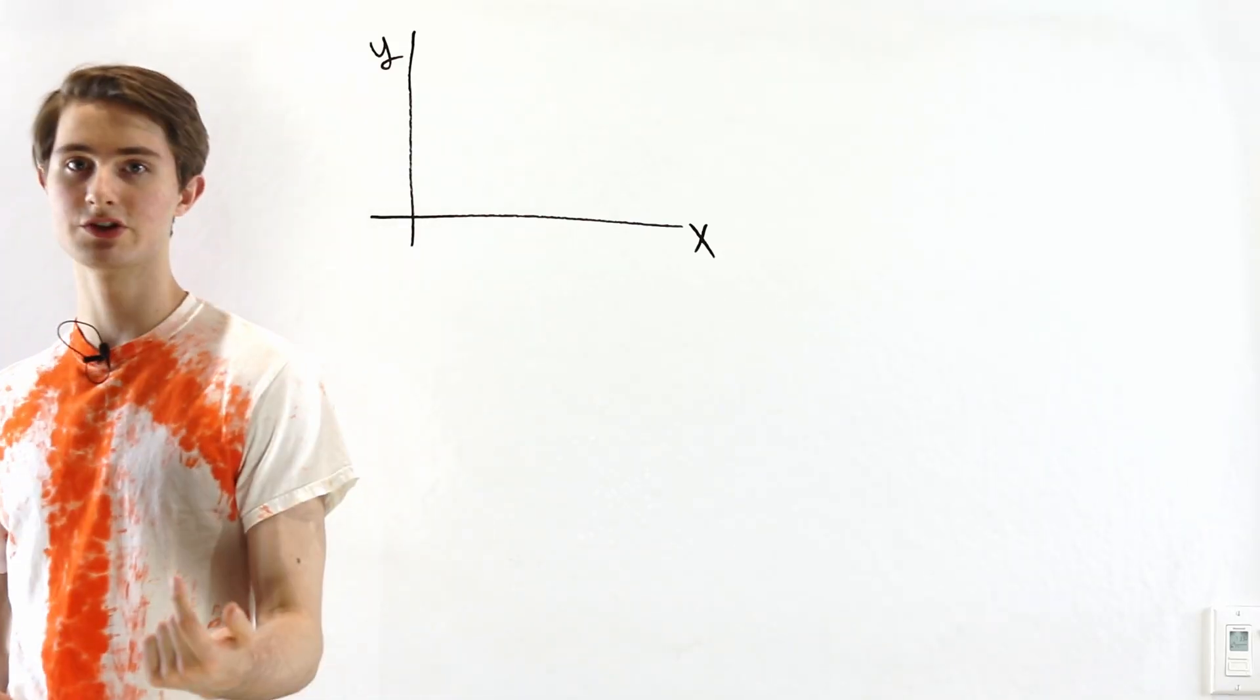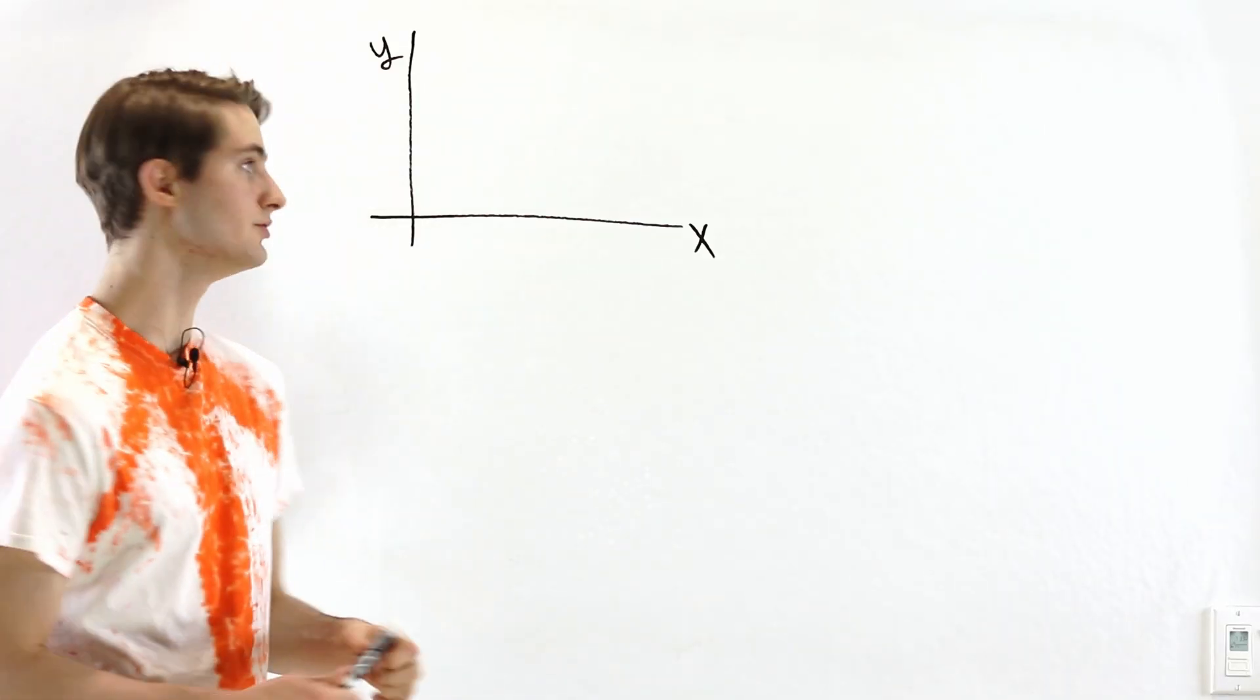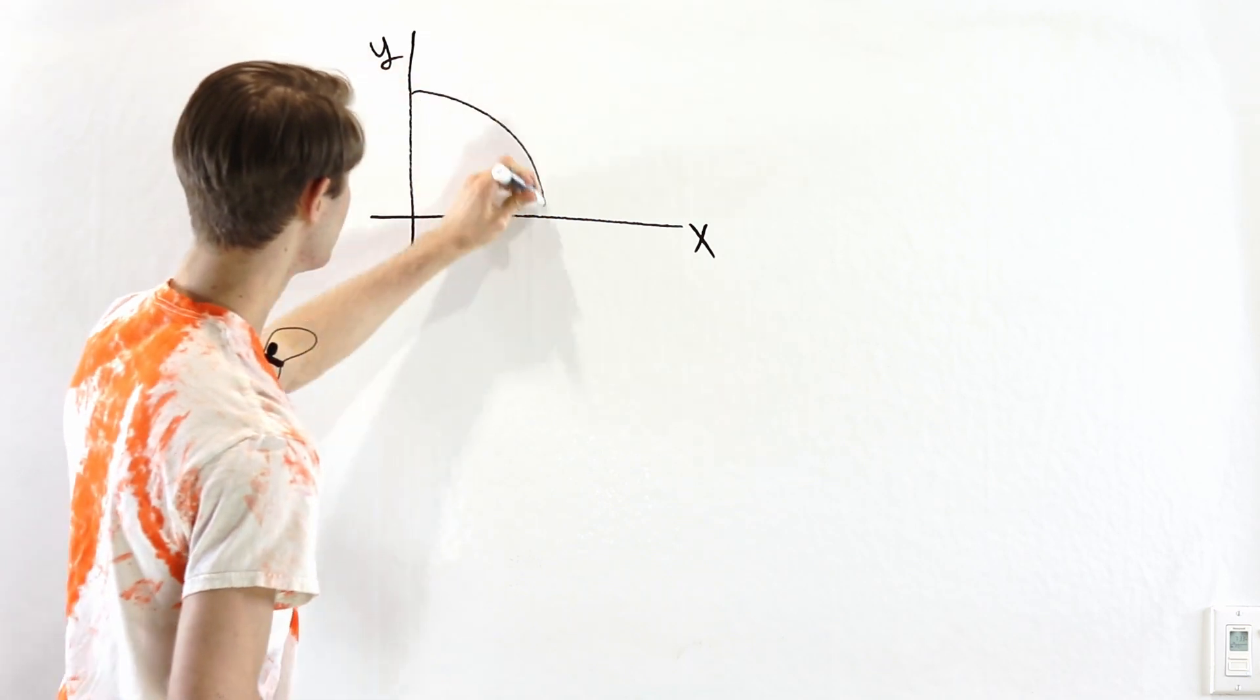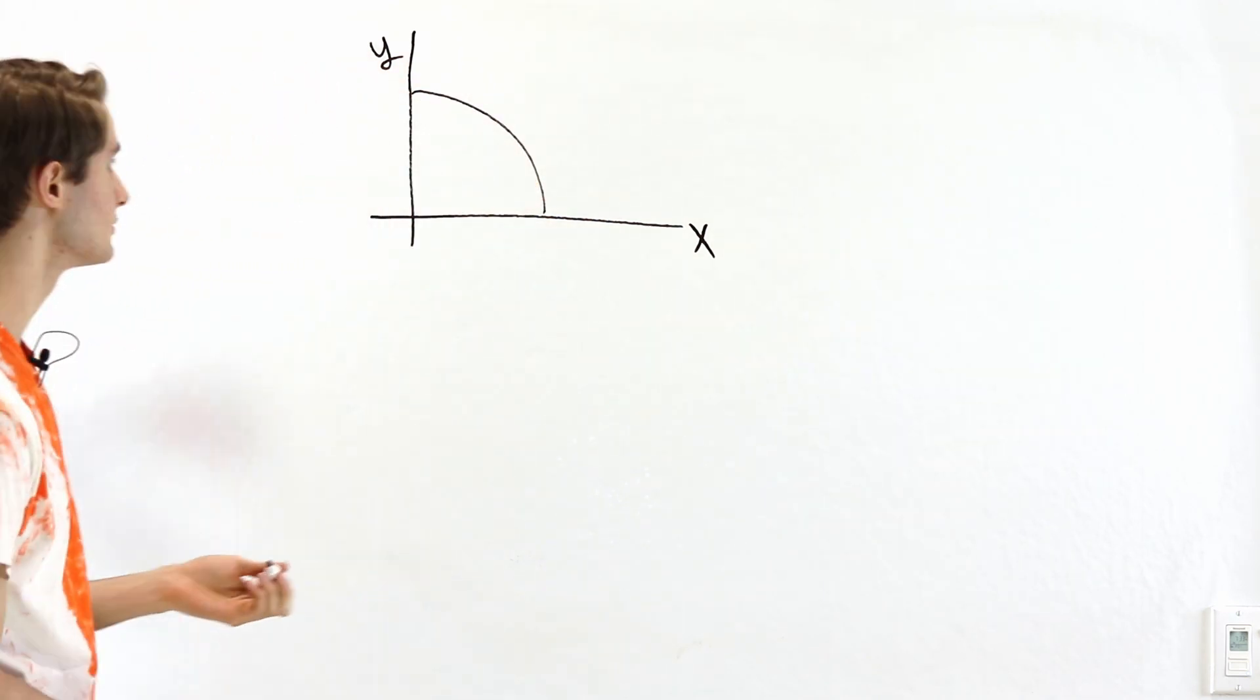So we are going to prove the angle sum formulas for sine and cosine using linear algebra. In order to do that, let's consider a unit circle.